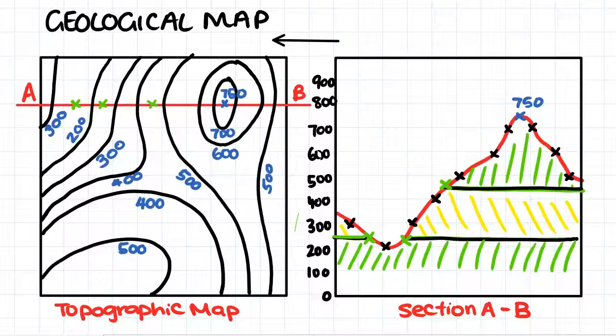When our bedding planes of our rock strata are horizontal, we draw our contours of our bedding planes parallel to our topographical contours. So we draw them like this.